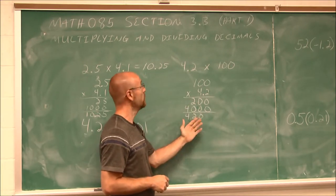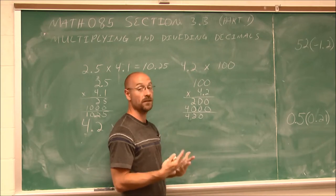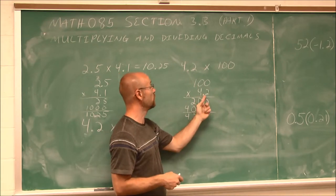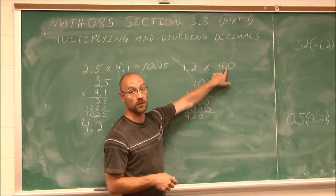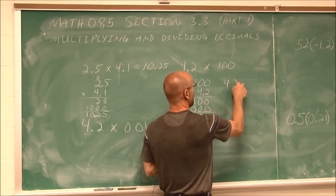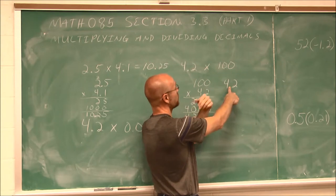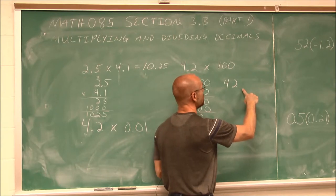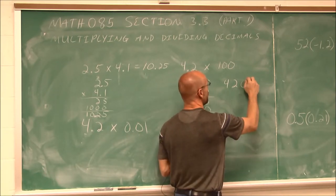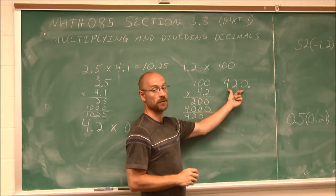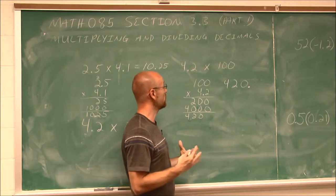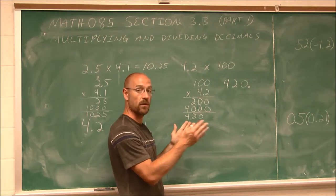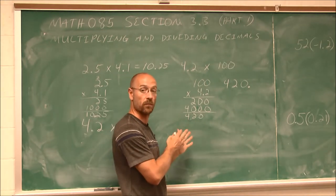So 4.2 times 100 gives 420. An easy shortcut: when multiplying by any factor of 10 — whether 10, 100, or 1,000 — just move the decimal point to the right by the number of zeros. So for 4.2 multiplied by 100, which has two zeros, I move the decimal two spots to the right and add a placeholder, giving 420. This works because our decimal system is based on factors of 10; each place we move away from the decimal is a factor of 10.